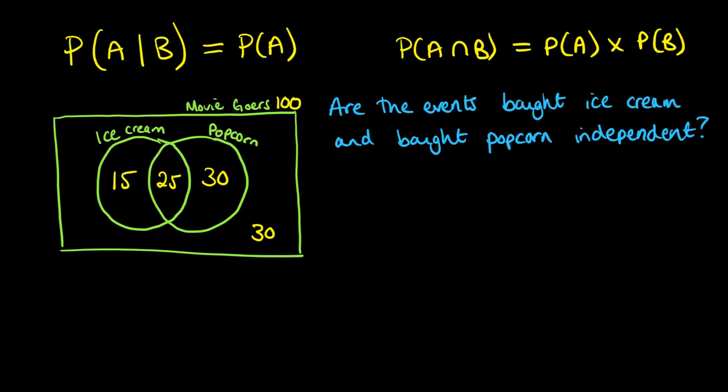Now let's say, are the events bought ice cream and bought popcorn independent? So I'll do this both ways around. We'll use the conditional probability formula first. So let's say that A is the event that they bought ice cream and B is the event they bought popcorn.